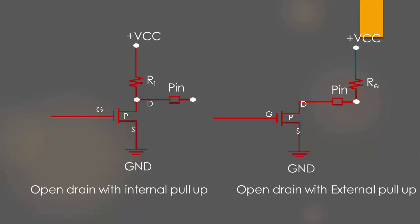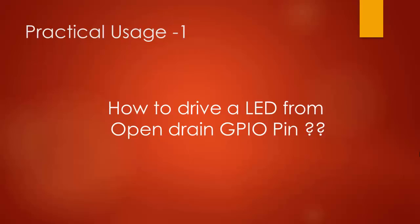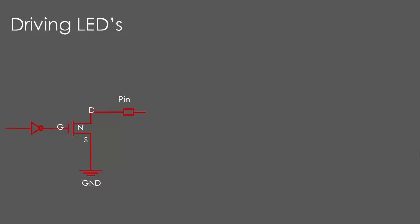Now let's see some of the practical usage of open drain mode. Let's see how to drive an LED from a GPIO which is in open drain output mode. Here you have a GPIO pin with open drain configuration. In order to drive an LED, first activate the internal pull-up resistor, then connect the LED to the pin.